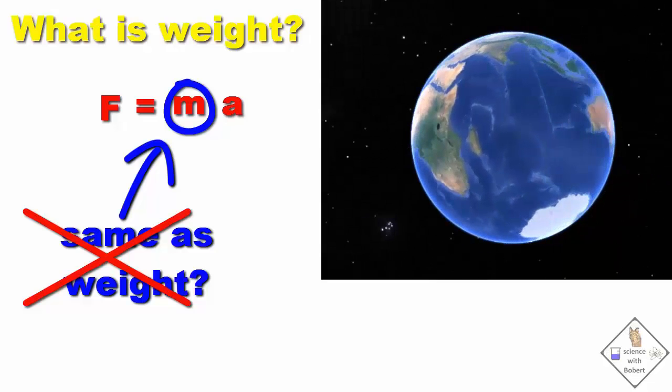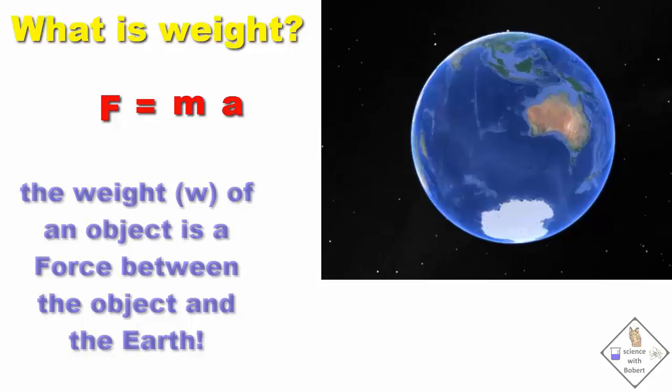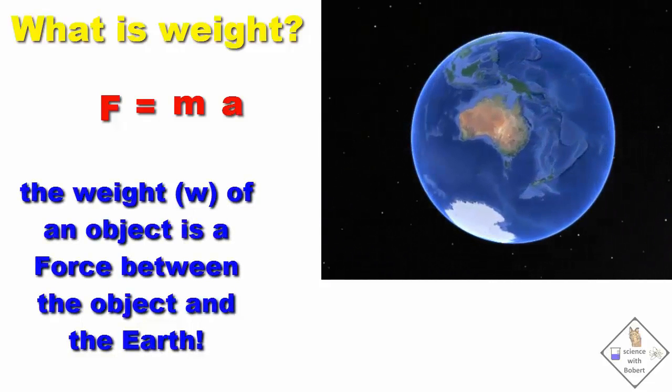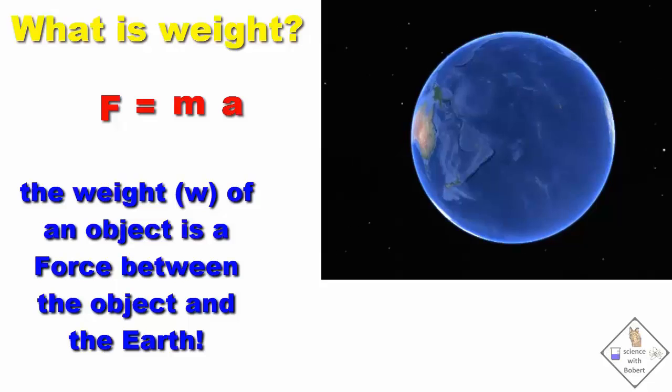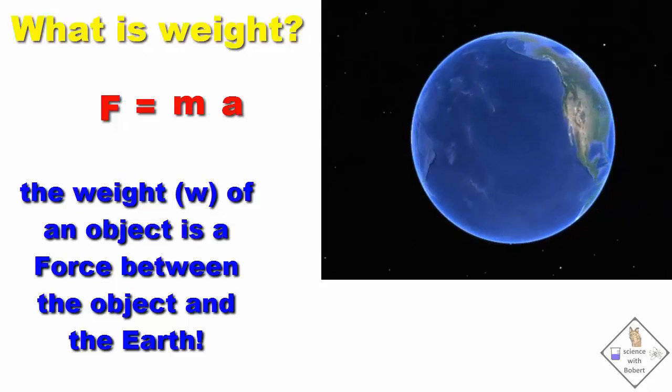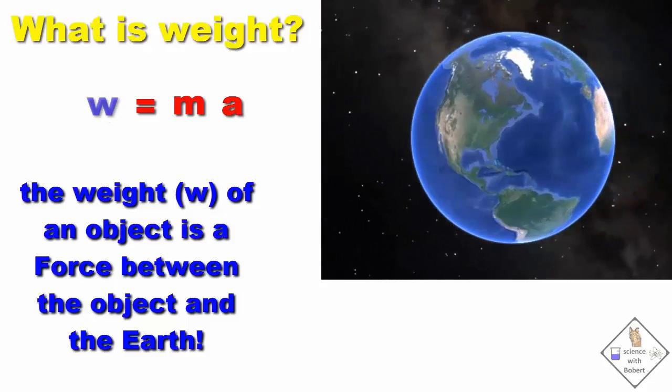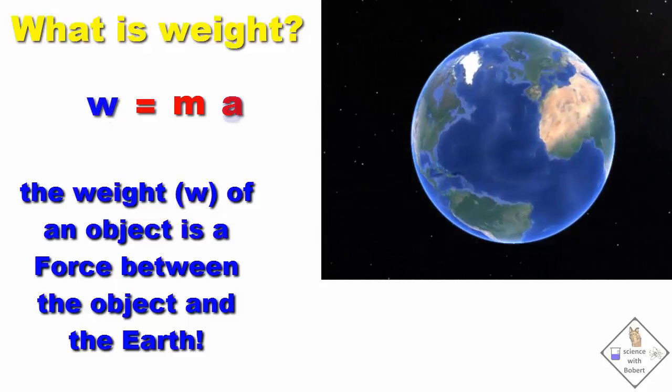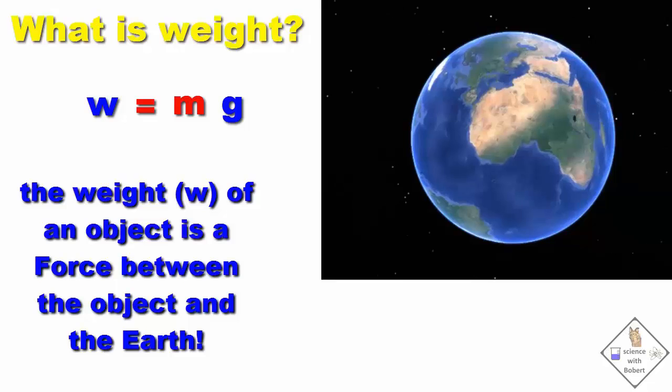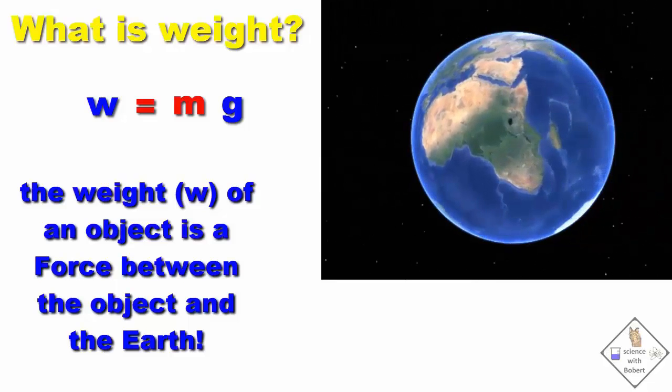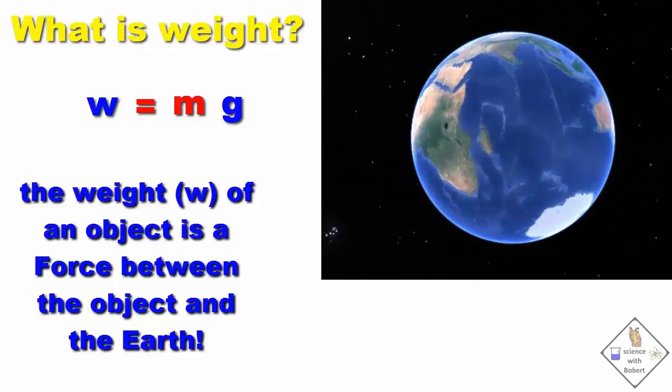In fact, weight is a force. Your weight on Earth is a measure of the attractive force between you and the Earth's gravitational pull. So in the equation F equals MA, F is replaced with a W for weight and A is replaced with G for Earth's gravitational acceleration. M is still the mass of the object.